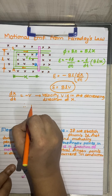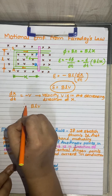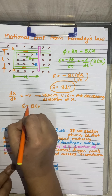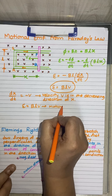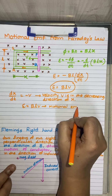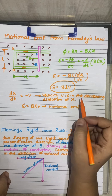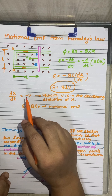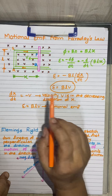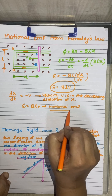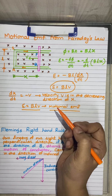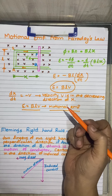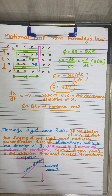Therefore, this induced EMF, BLV, is called Motional EMF because it is generated due to the motion of the conductor in the magnetic field. This is the formula for Motional EMF, E = BLV, deduced from Faraday's laws of electromagnetic induction.